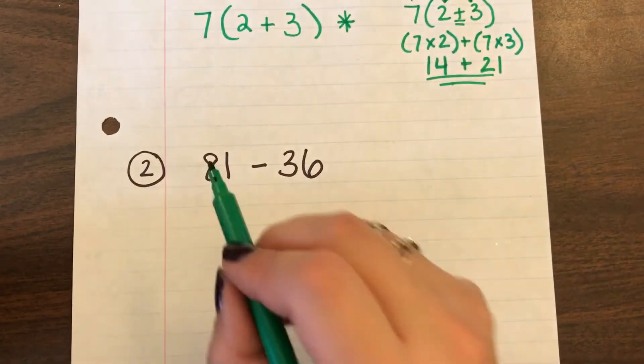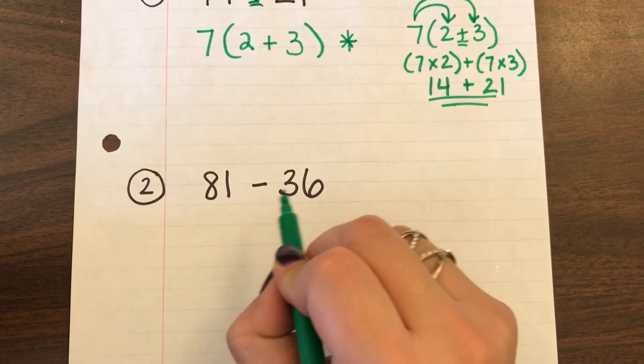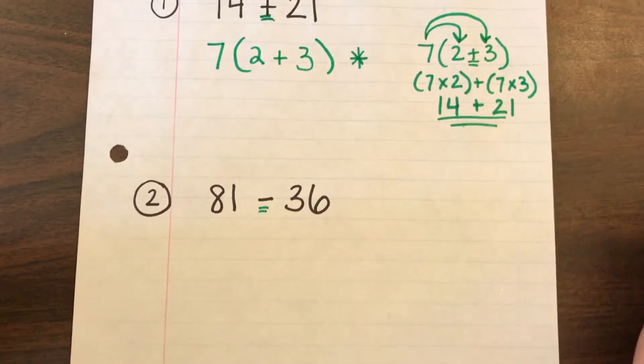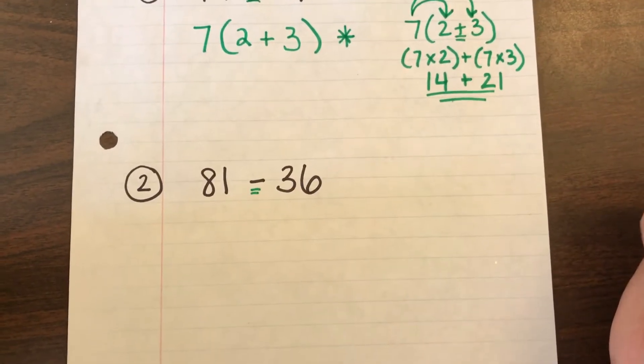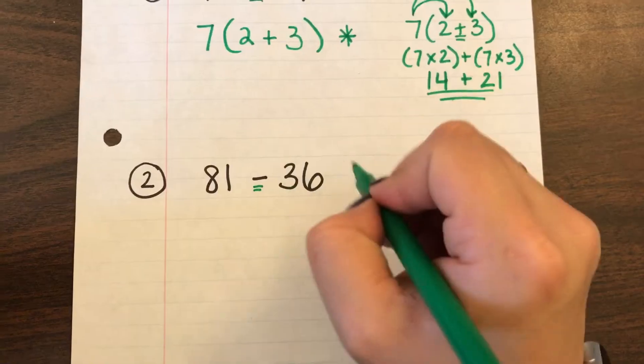Alright let's try number two. So we've got 81 minus 36. So I know this time since it's a minus it's a say bye multiply problem. So 81 and 36.